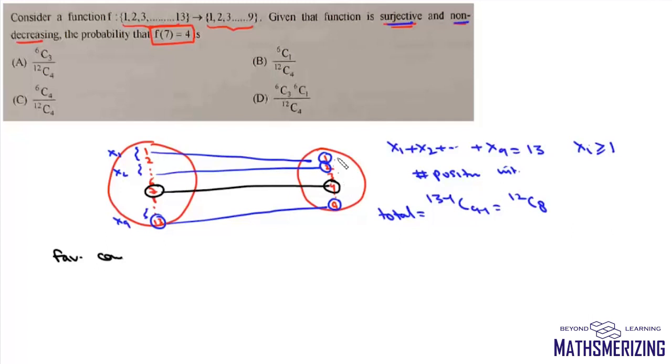For these first four elements we can write x1 plus x2 plus x3 plus x4 equals 7, where each xi is greater than or equal to 1. The number of positive integral solutions in this case will be 7 minus 1 choose 4 minus 1, which is 6 choose 3.